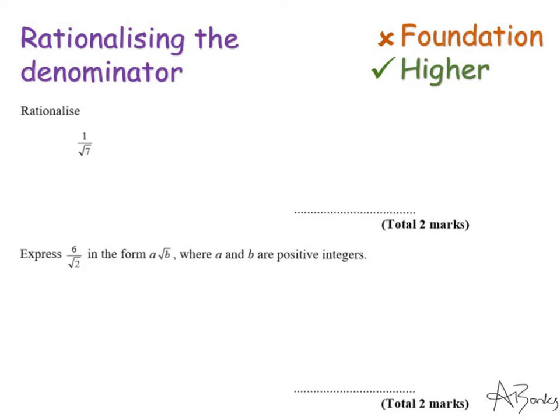This first question says: rationalise 1 over root 7. By 'rationalise the denominator', it means to get rid of the surd on the denominator, because surds are irrational numbers, so we are going to rationalise it by turning that denominator into a rational number. The trick is we're going to multiply it by root 7.